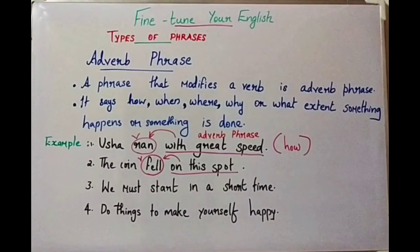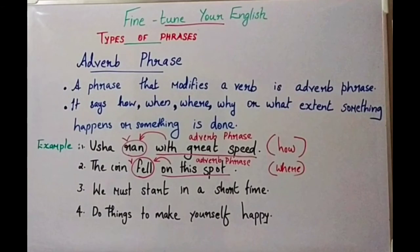See the second example: The coin fell on this spot. In this sentence, 'on this spot' is the Adverb Phrase, and it says something more about the verb 'fell,' or it adds something more to the verb 'fell.' We are getting the answer to the question: where did the coin fall? And it's on this spot.